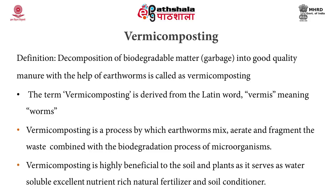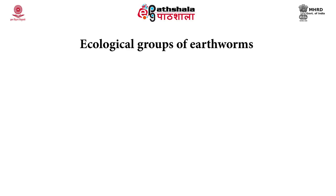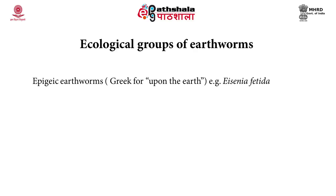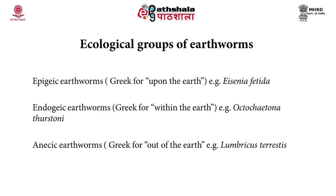Vermicompost, the product of vermicomposting, is highly beneficial to earthworms and plants, and serves as a water-soluble, excellent nutrient-rich natural fertilizer and soil conditioner. There are about 4,000 different types of earthworm species present all over the earth. But not all earthworm species can be used for vermicomposting. Depending upon ecological niche, earthworms are divided into three categories: epizaic earthworms, which live upon the earth; endozaic earthworms, which live within the earth; and anecic earthworms, which live out of the earth.